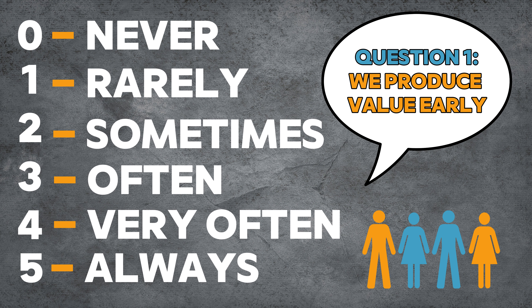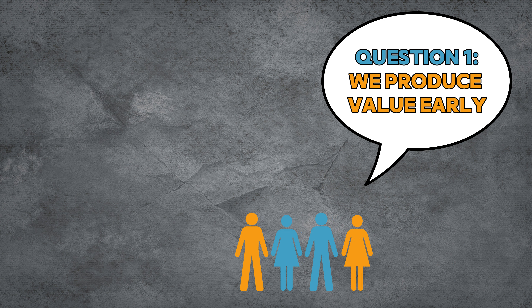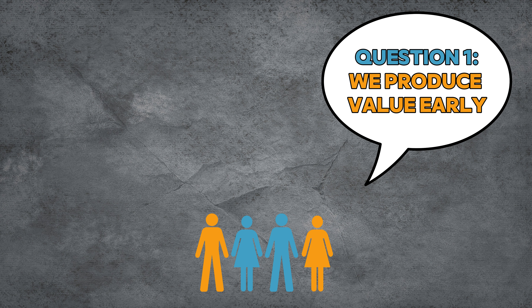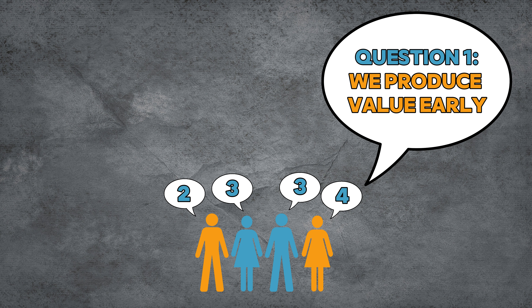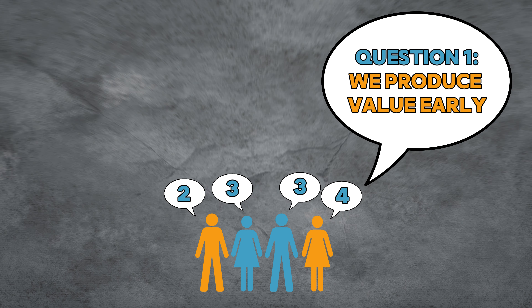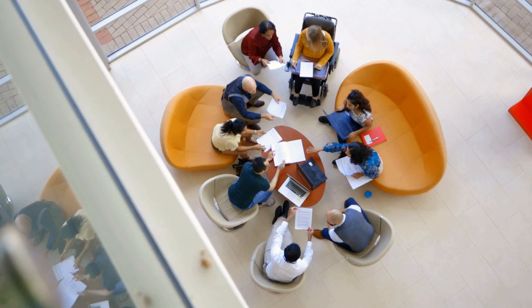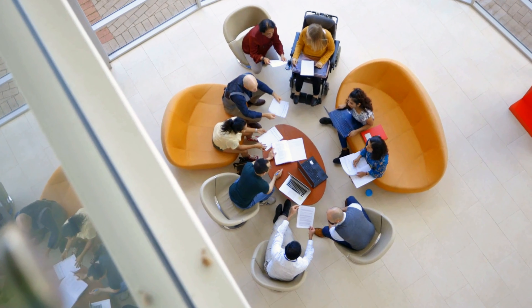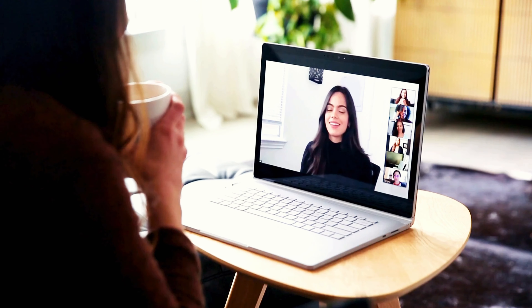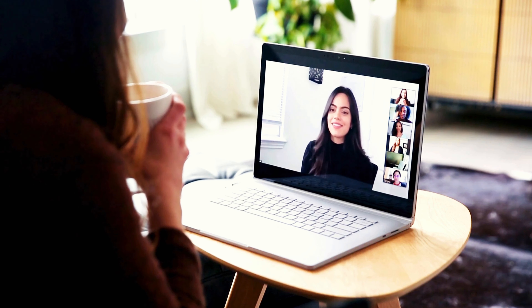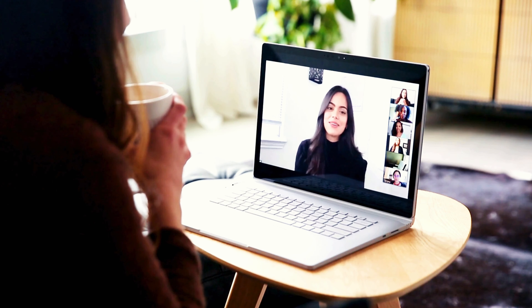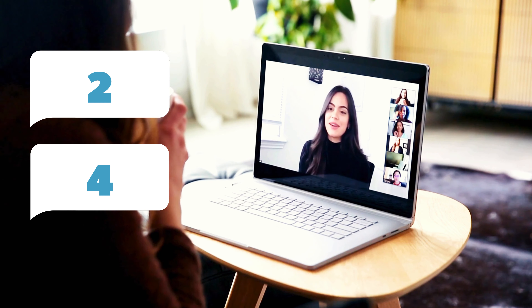Give the team a moment to think about their answer and then let them answer simultaneously. It is important that the team answers simultaneously, as team members may be influenced by each other's answers. If you are offline, you can use the good old scorecards, and if you are online, you can ask everyone to send their score in the chat.